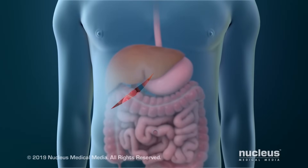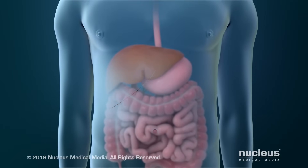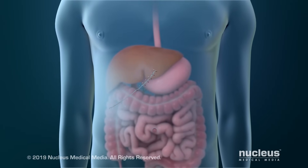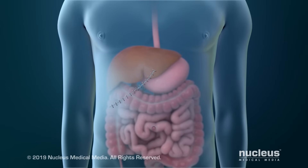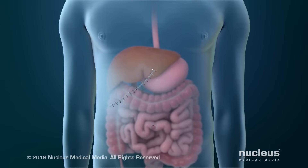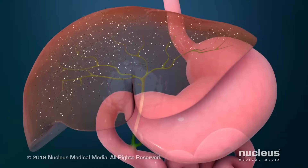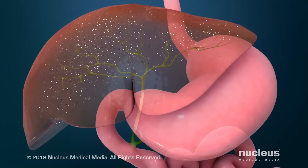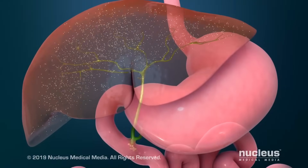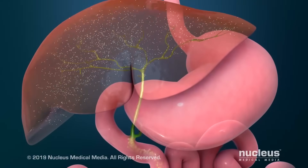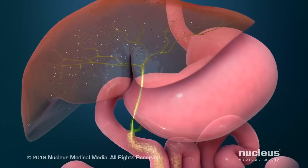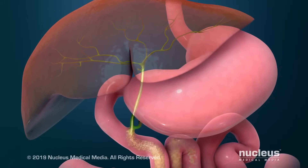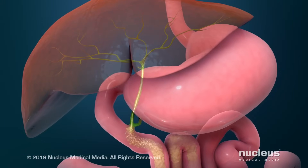At the end of the procedure, your incision will be closed with staples, stitches, or skin glue. Once your gallbladder has been removed, you will still be able to digest fat because bile will flow directly from your liver into your small intestine.